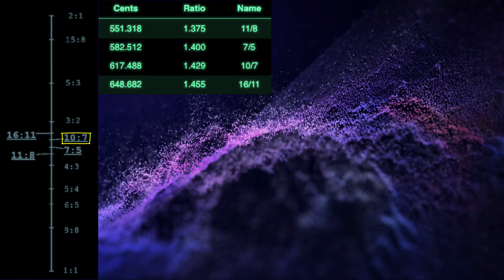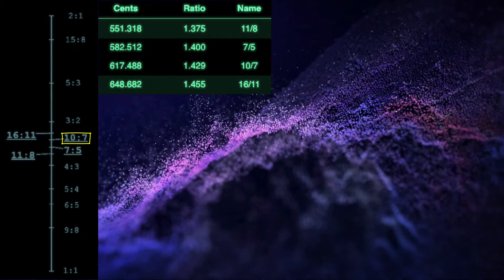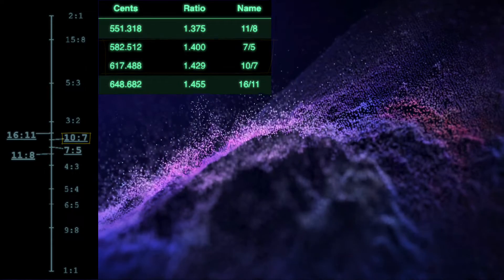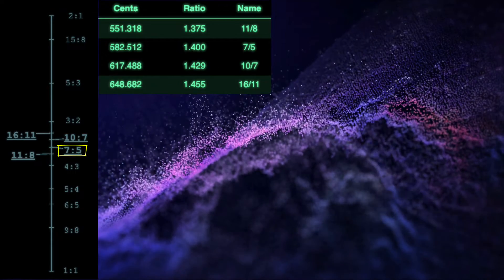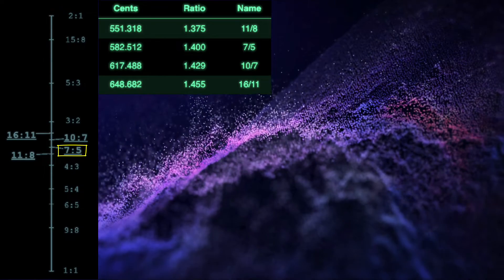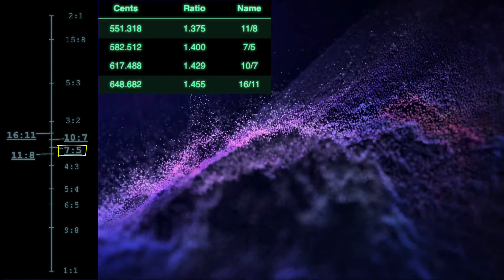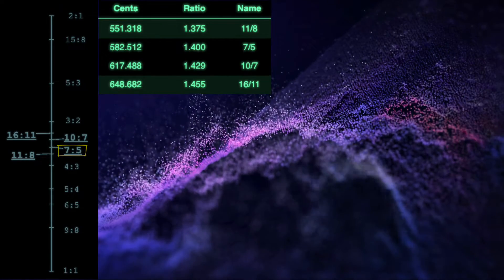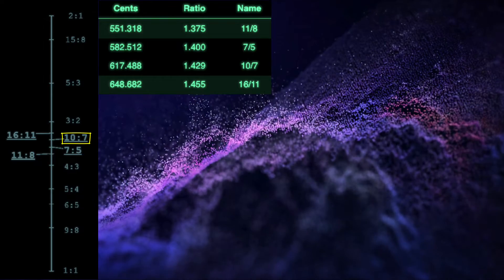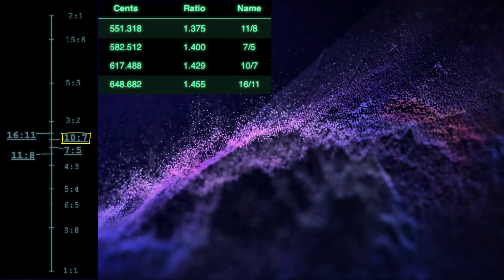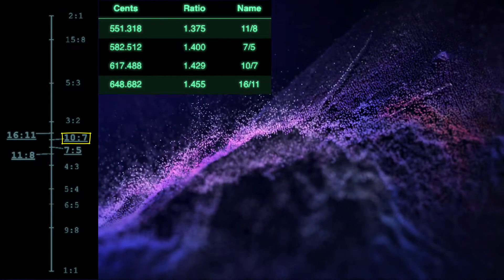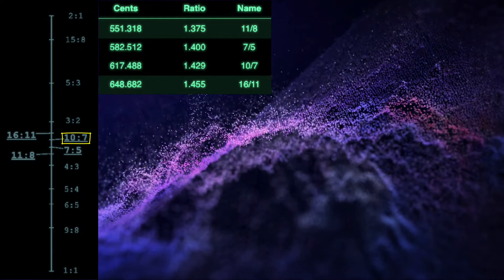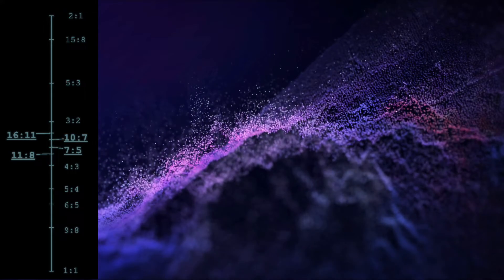Next we have the 10 over 7. And these two septimal tritones have a very noticeably different feel to them. The 7 over 5 is so much softer, more consonant and bell-like. The 10 over 7 is brighter and a bit more uneasy. Almost anxious. It's almost sort of crying out in pain.